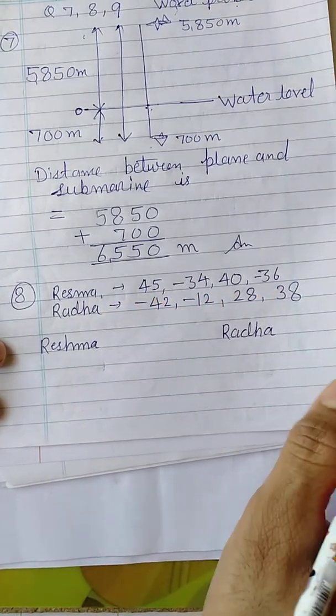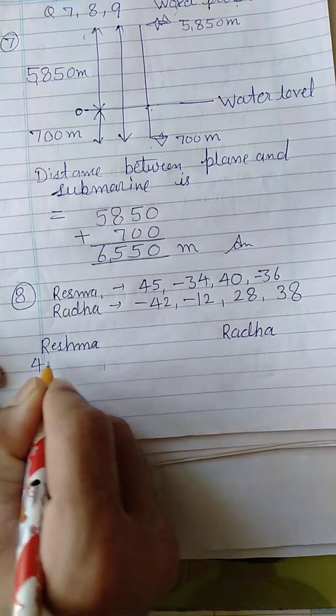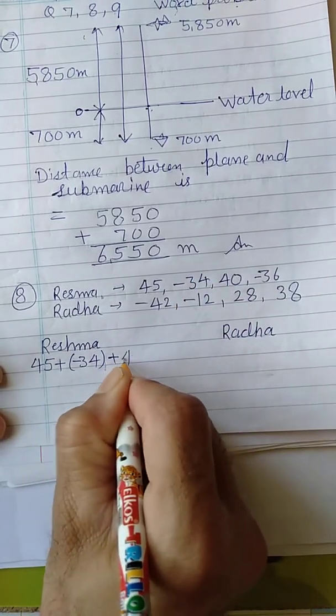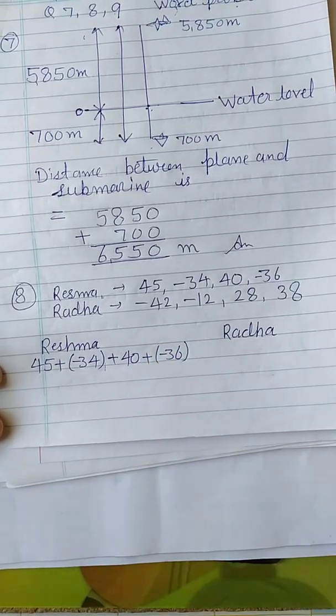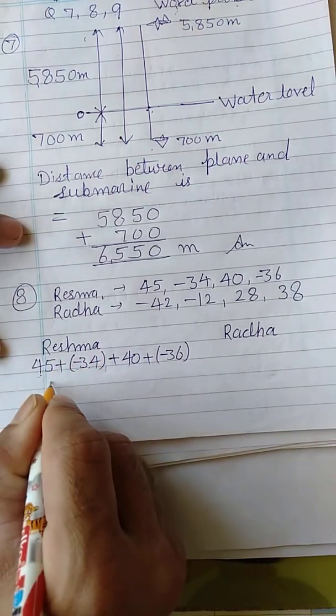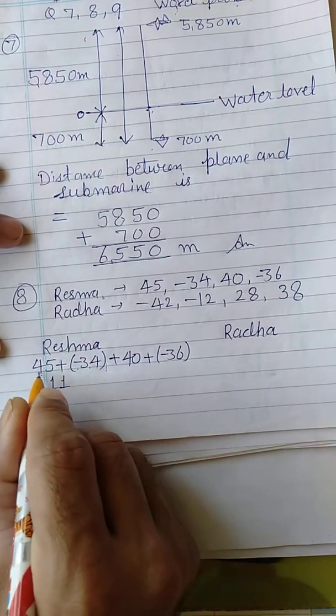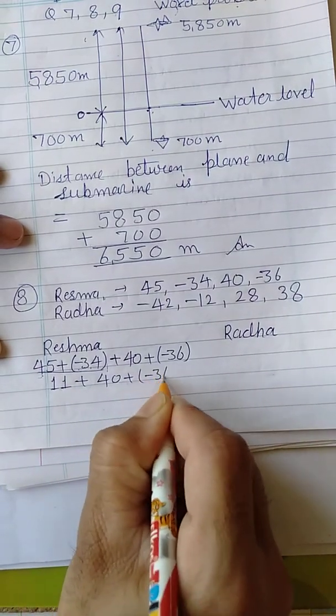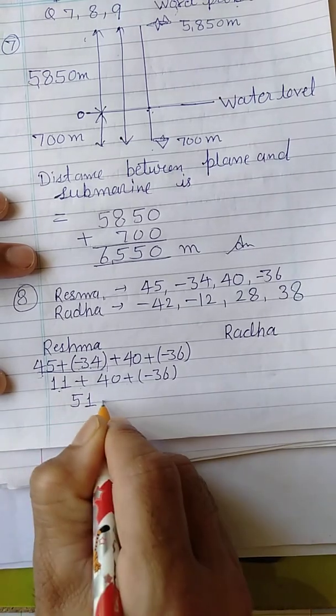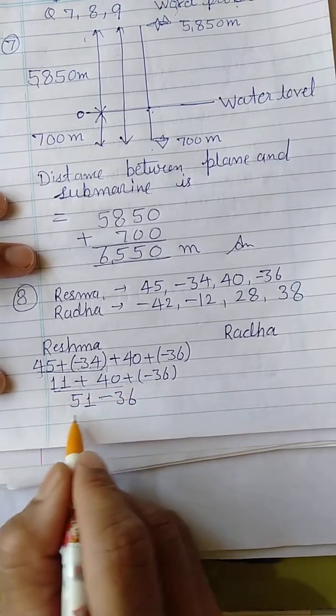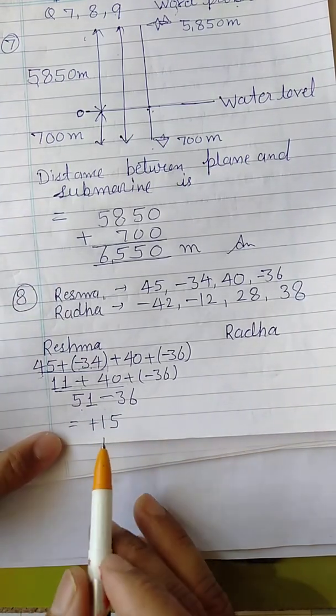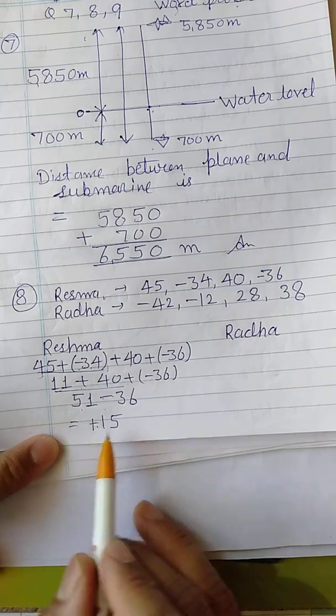Sum of Reshma's score: 45 plus minus 34 plus 40 plus minus 36. Here we will solve it. 45 and minus 34, different signs, we will subtract. 45 minus 34 is equal to 11 plus 40 plus minus 36. Next thing is 11 plus 40 is equal to 51 and minus 36. Then 51 minus 36 is equal to plus 15, not minus 15. So the total score of Reshma is plus 15.